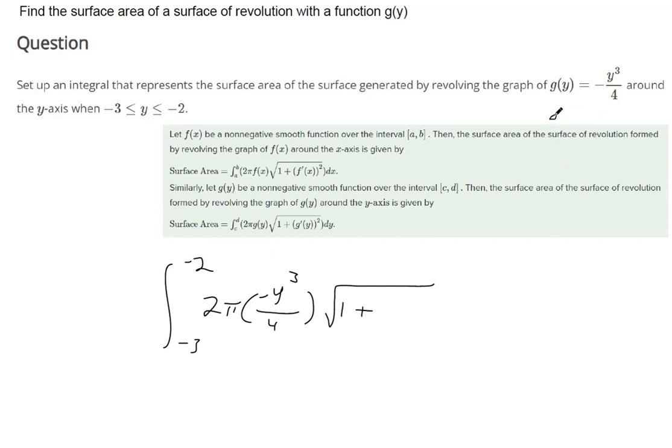So the derivative would be negative 3y squared over 4. And we need to square that derivative according to the formula. So there's our derivative. Still need to square it.